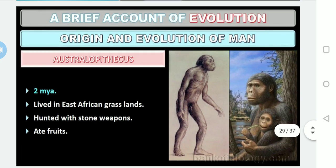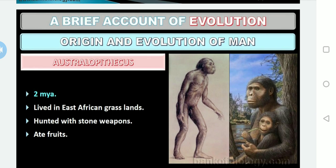After the ancestral apes — Dryopithecus and Ramapithecus — the next stage is the ape man. Australopithecus is the only species that comes under the ape man. They exhibited the characters of both ape and man, which is why they are commonly known as the ape man. This man-like ape lived in eastern and southern African grasslands.